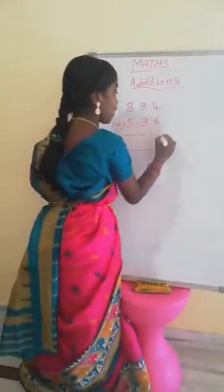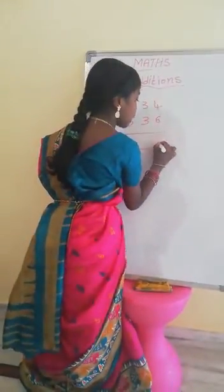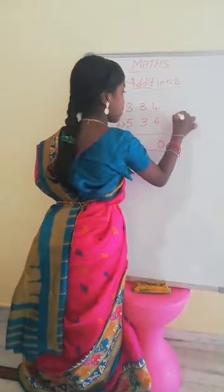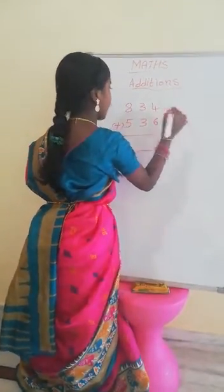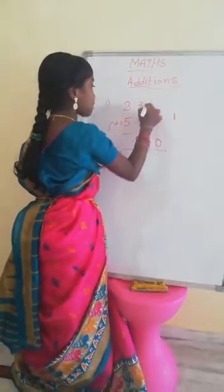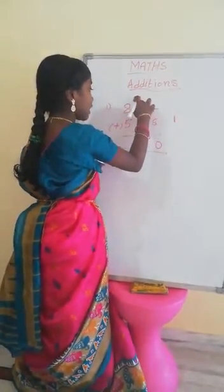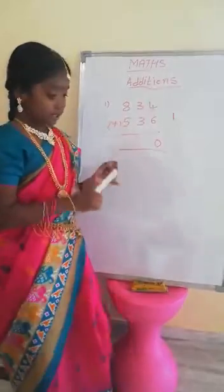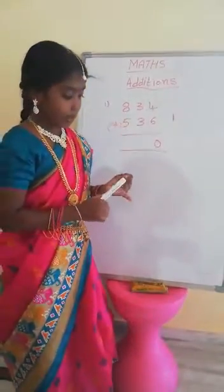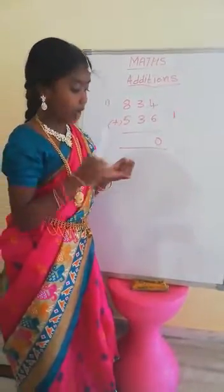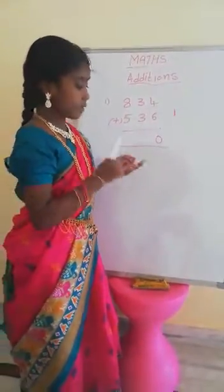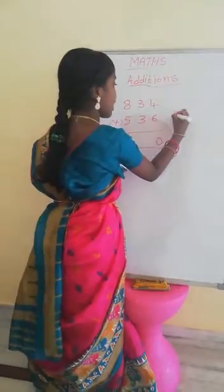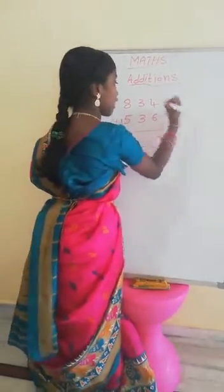Keep here 0 and carry 1. After, 3 plus 3: count — 3, 4, 5, 6. The answer is 6, plus 1 carry makes 7.